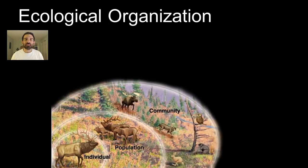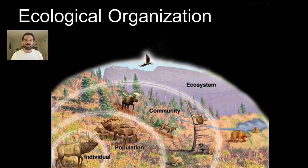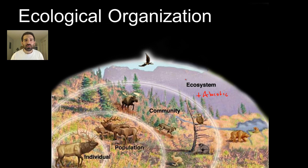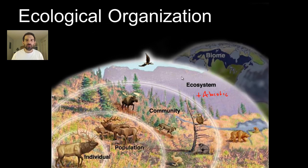The next layer is community. Community is all the elk plus all the other species that live alongside it, including the animals and the plants. The ecosystem is the next layer, and what we've done is we've taken the community and added in the abiotic factors — so we've added in the rocks, the soil, and the air.